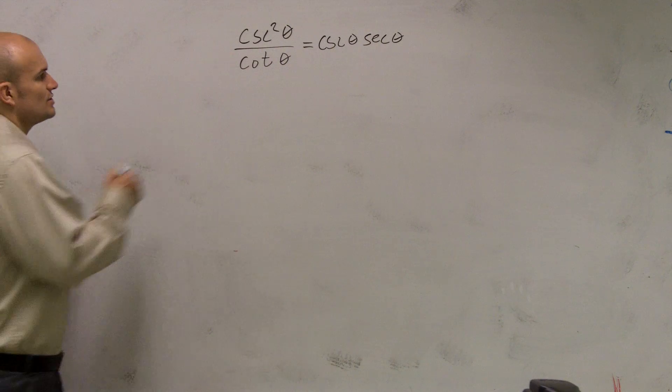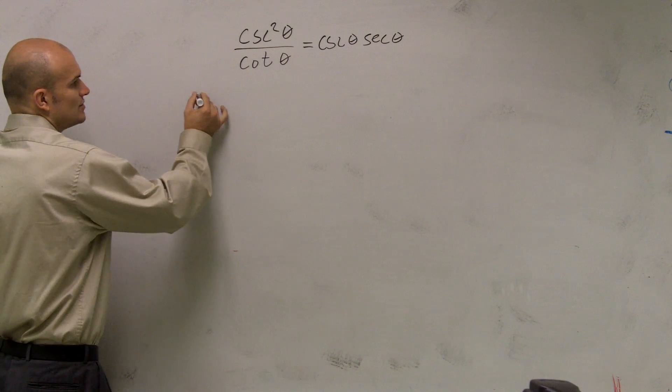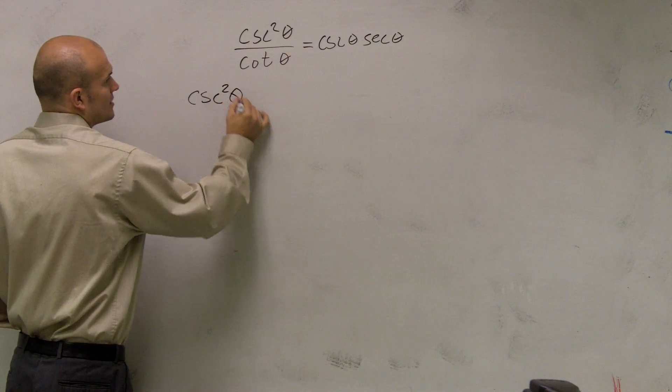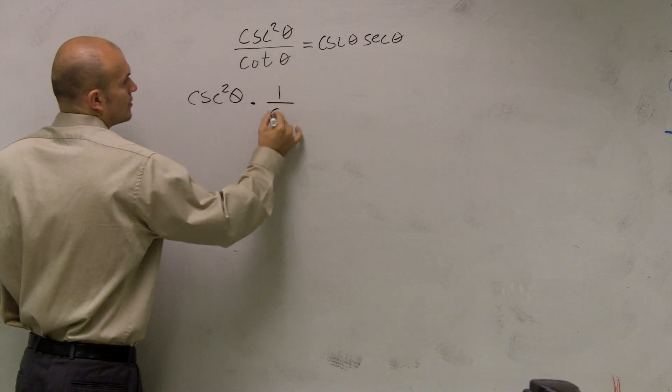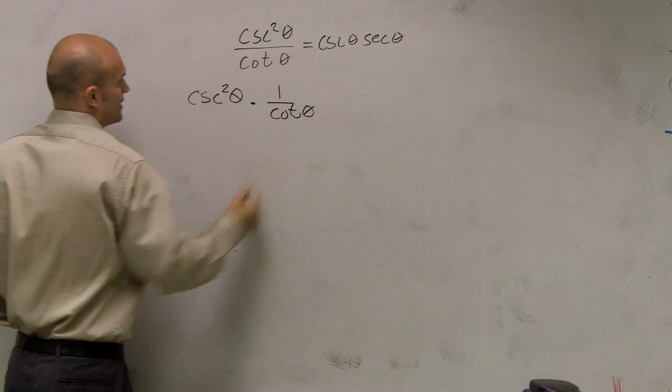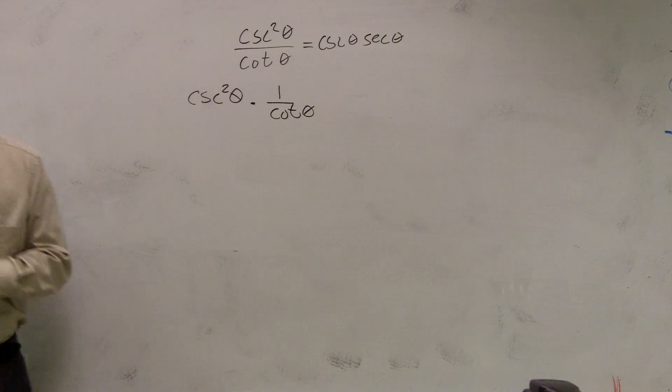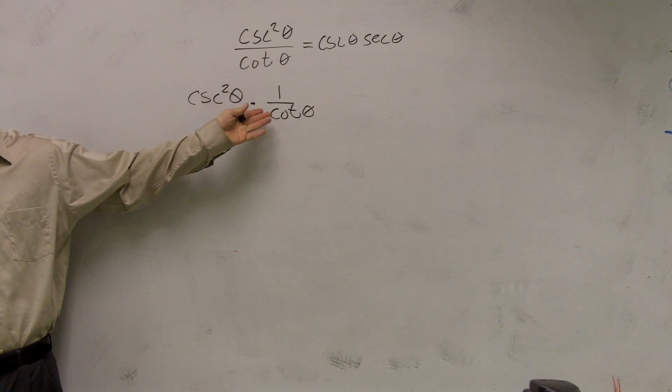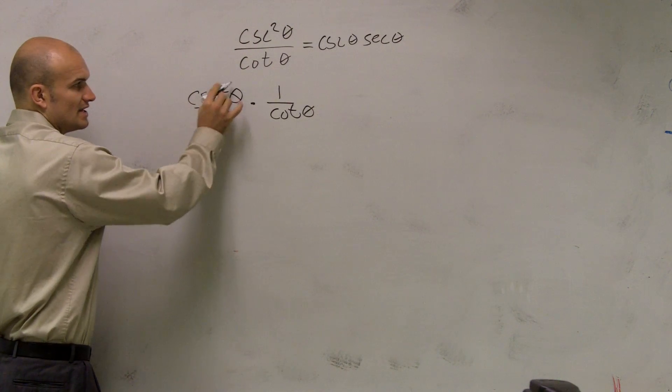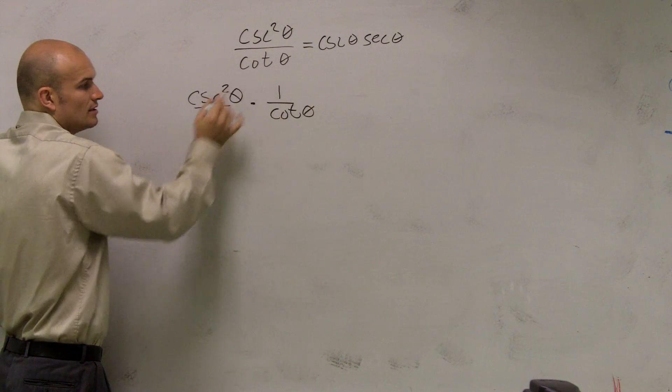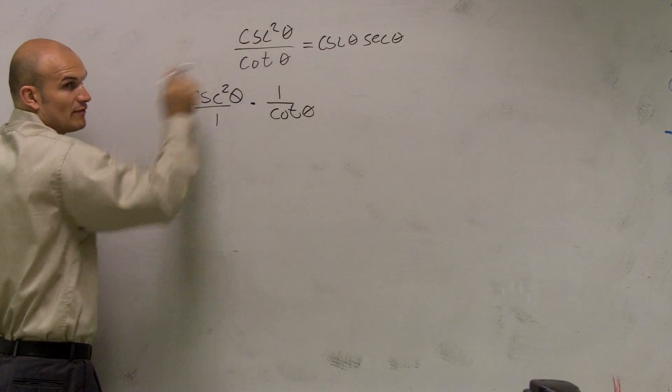So one thing we could do, and the reason why I'm going to do this is I know a way to get rid of my fractions, is if I kind of put this over 1 times 1 over cotangent theta. I didn't change anything mathematically. All I did was I undid my fraction as a multiplication. Because if you were to multiply these across, cosecant squared times 1, and 1 times cotangent is still going to give you my fraction.